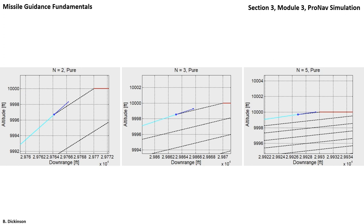The greater the value of N, the faster we achieve a collision triangle, and the less control effort that must be made for course correction late on in the engagement.